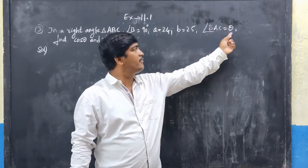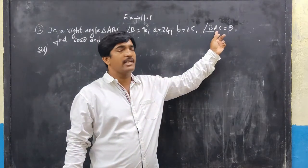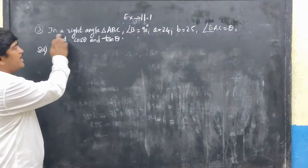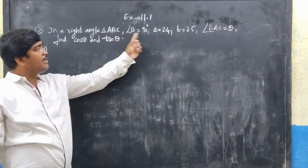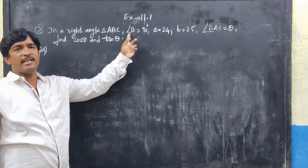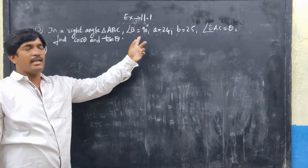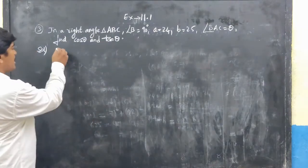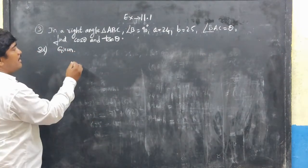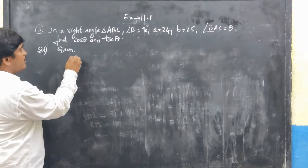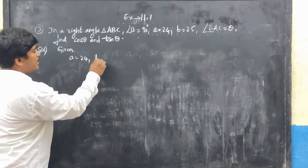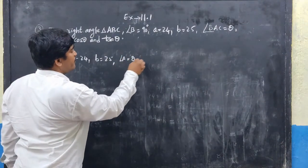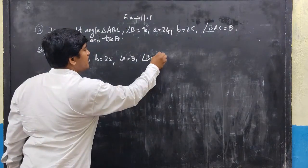The angle BAC equals theta, indicating the angle should be at A. It is given that in right angle triangle ABC, angle B = 90 degrees and a = 24, b = 25. We need to find cos theta and tan theta. Since 25 is the longest side, it is the hypotenuse.